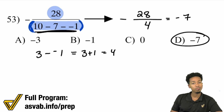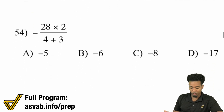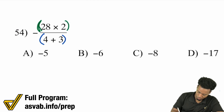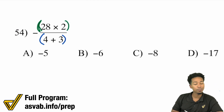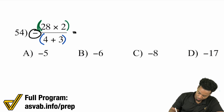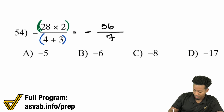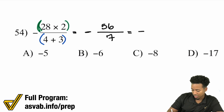Not terrible. Just remember: numerator and denominator are each their own group. So for this next problem, don't forget that negative right there — it's sneaky. 28 times 2 is 56 with mental math. 4 plus 3 is 7. So what's negative 56 divided by 7? That'll be negative 8.